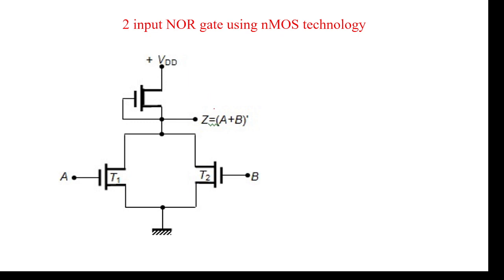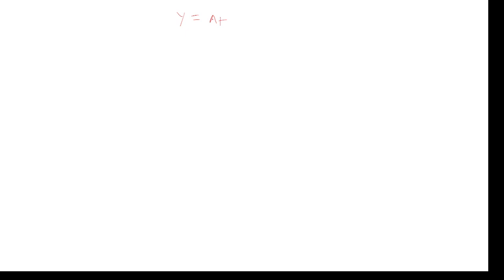I will explain the two-input NOR gate circuit using NMOS technology. The NOR gate output is A plus B whole bar. According to the design rules, if there is a plus (addition) operation, the pull-down network should be in parallel. So for A plus B, the pull-down network should be parallel — this is input A and this is input B.